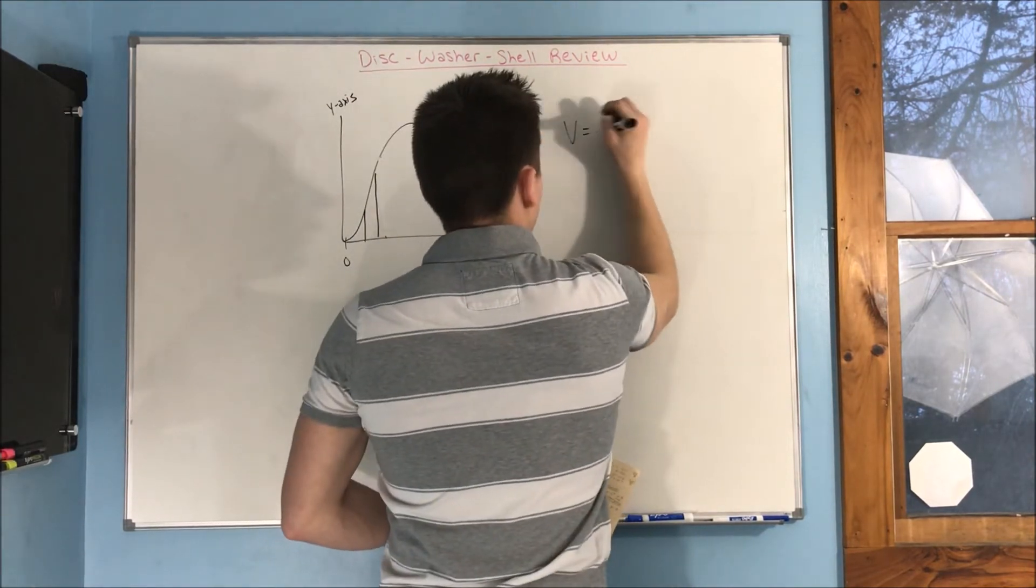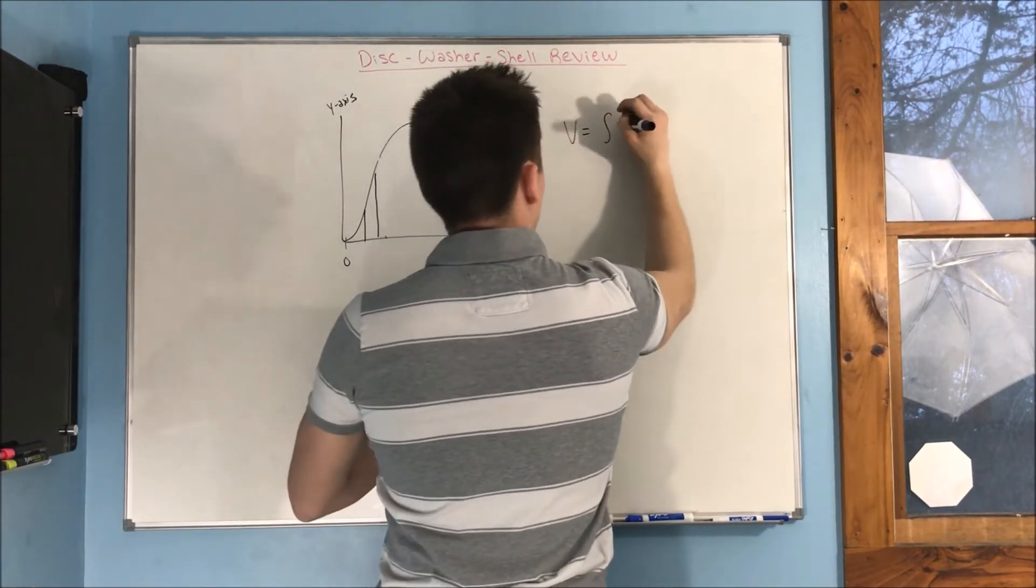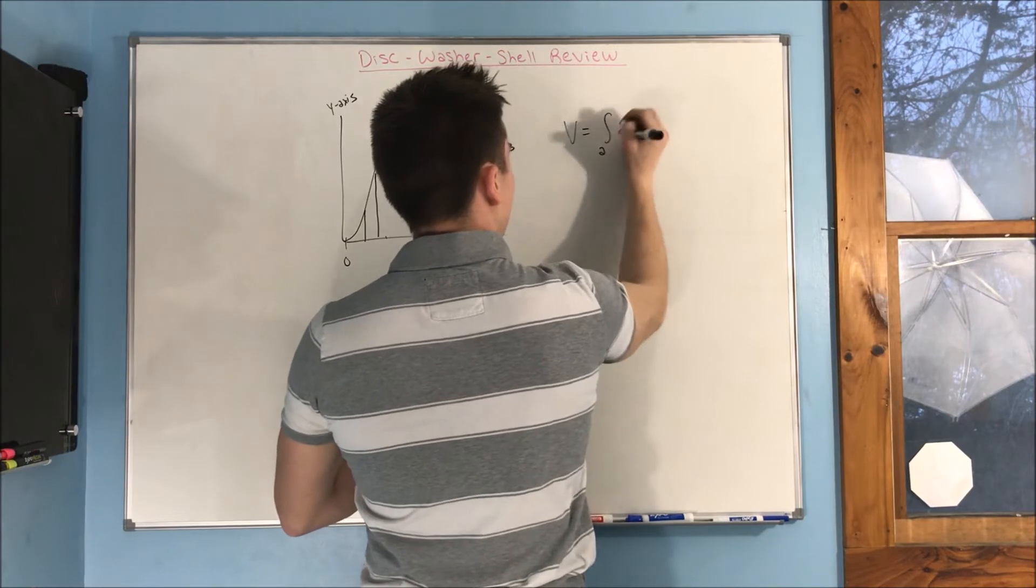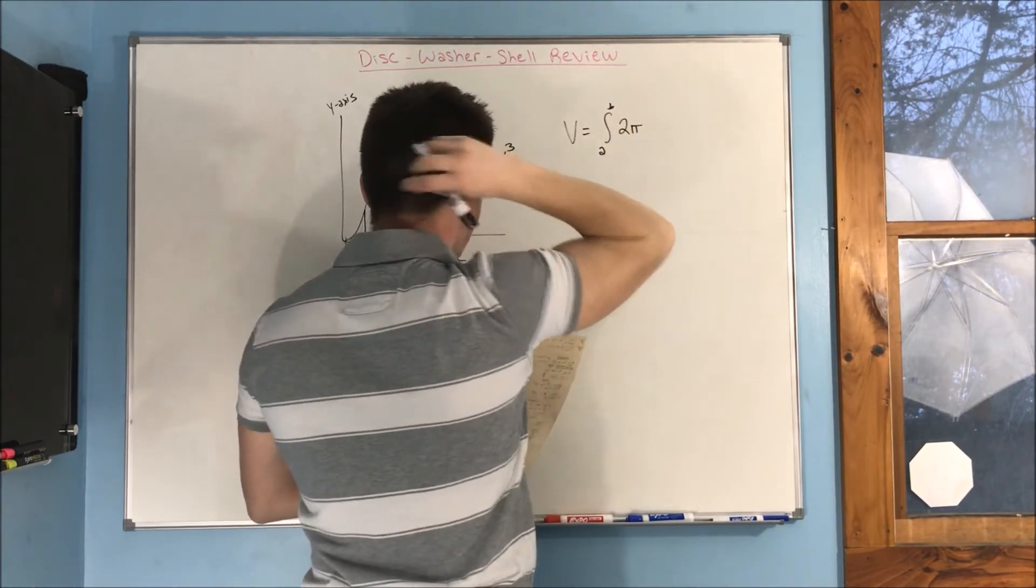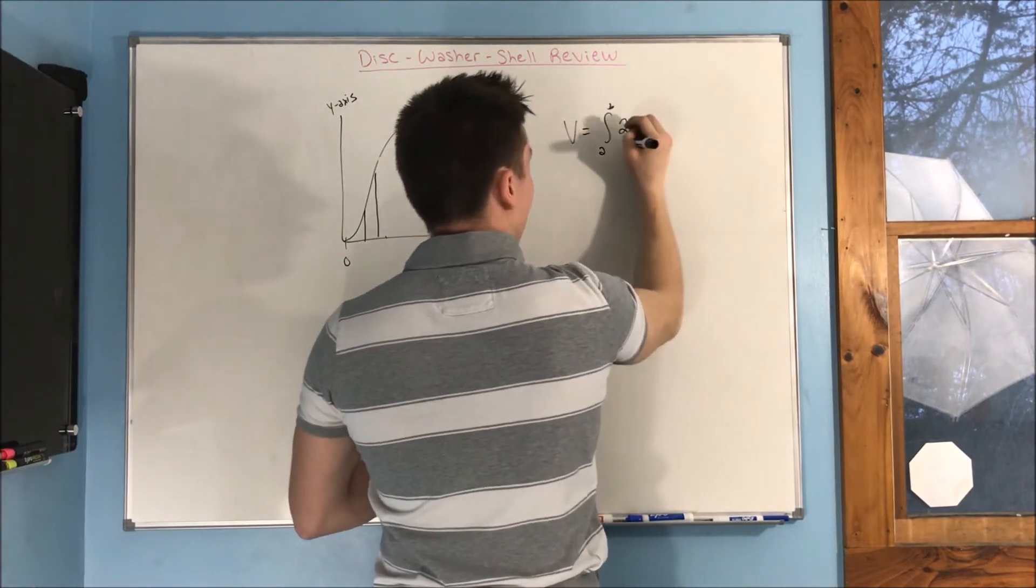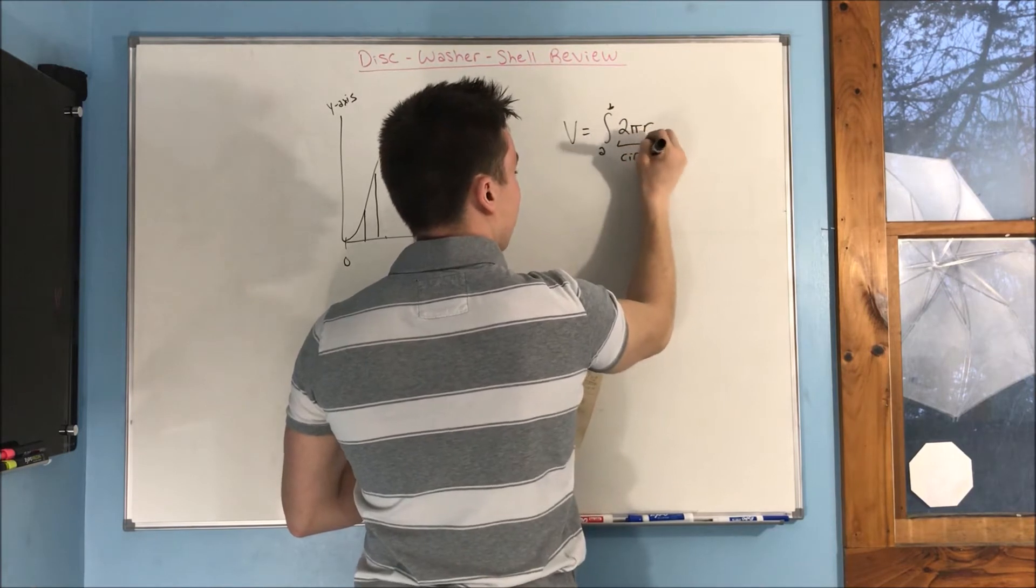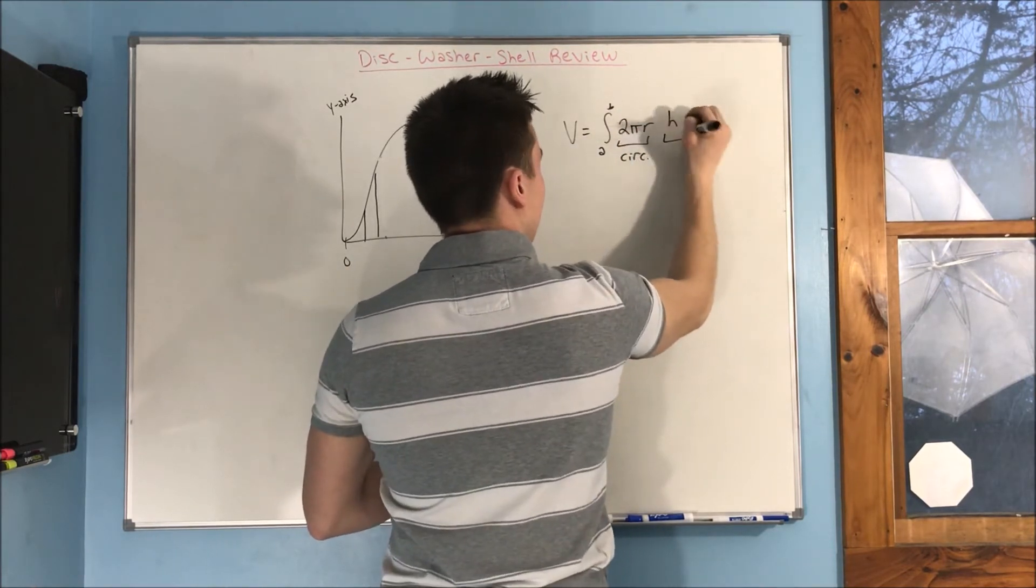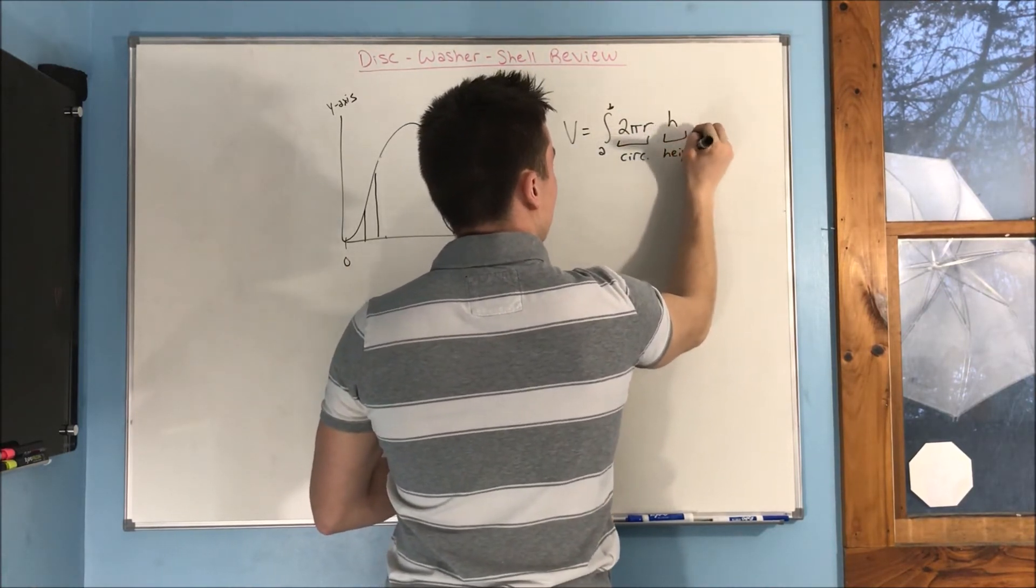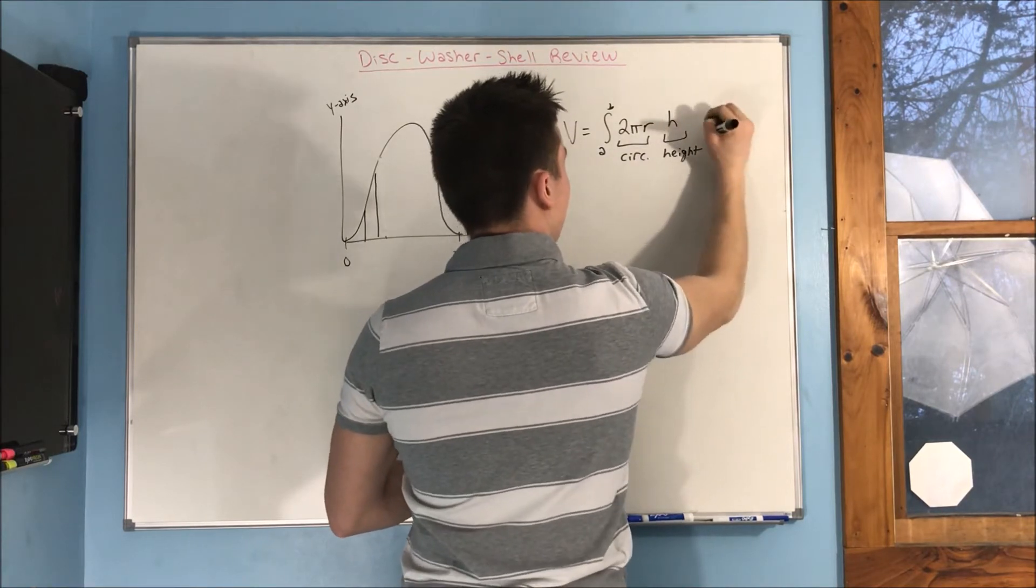You're going to get volume equal to the integral from A to B of 2 pi times your radius. So, you can remember that as circumference, times your height, times your thickness.